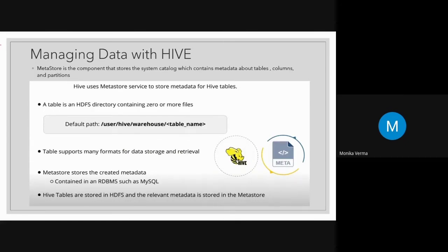The Metastore manages data inside Hive by storing the metadata or namespace of all tables stored inside the database. The Metastore is the component that stores the system catalog, which contains metadata about tables, columns, and partitions. By default, Hive-related database metadata is stored in a specific path.